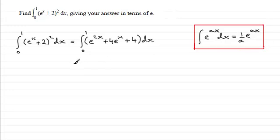So we just integrate now according to this rule here. So for this one, e to the 2x, that's going to be a half e to the 2x. And then for plus 4e to the x, that's just going to be 4e to the x.